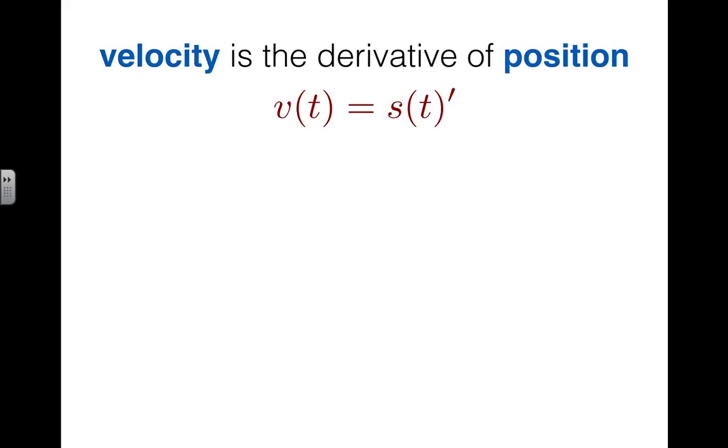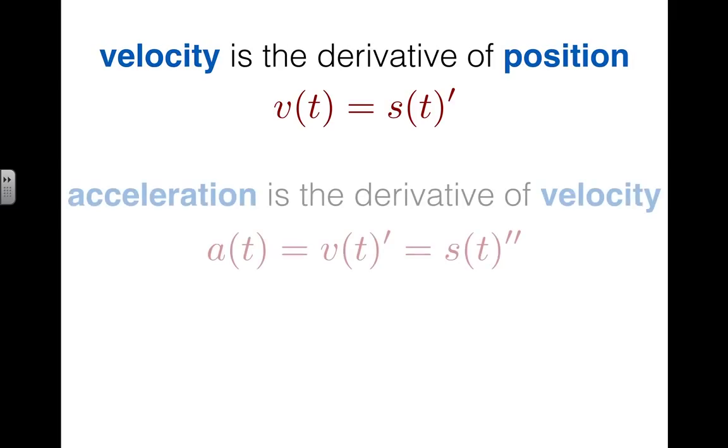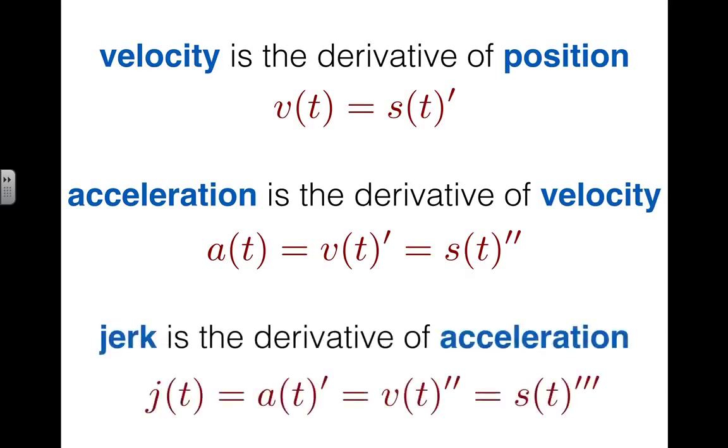So let's look at some definitions now. There's a relationship between the position of a particle or object and its velocity, and that is that the velocity is the derivative of the position. Similarly, the acceleration is the derivative of the velocity or second derivative of the position function. And then jerk is the derivative of acceleration, which turns out to be the third derivative of position, second derivative of velocity, or the first derivative of acceleration.